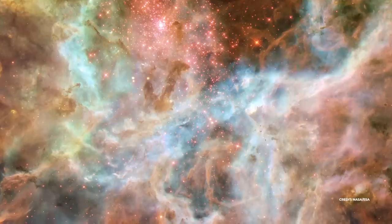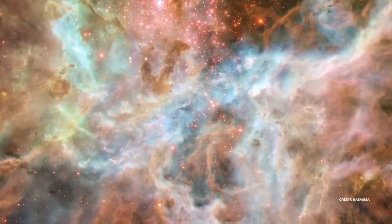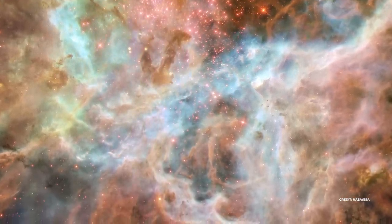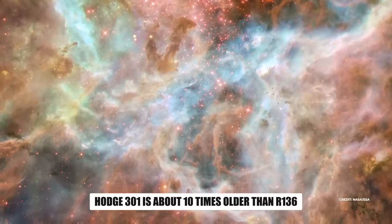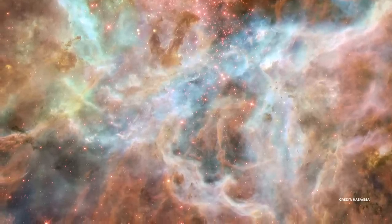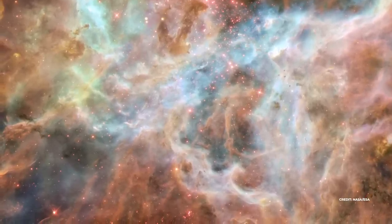The star cluster Hodge 301 is near the image bottom. Hodge 301 is about 10 times older than R136. Hodge 301 has supernovae from ancient stars. This explosion compressed tarantula gas into filaments and sheets around the cluster.